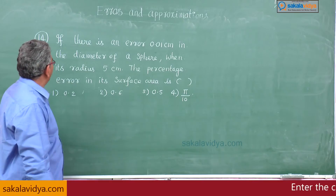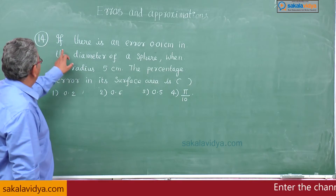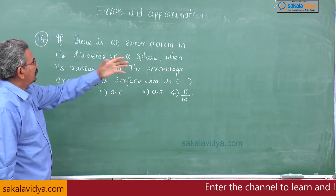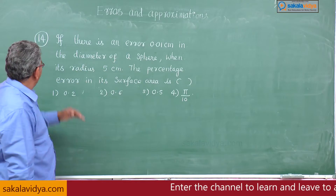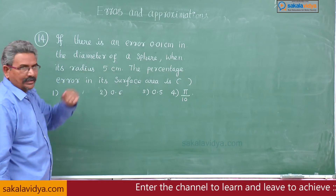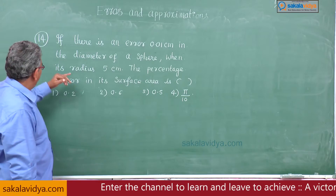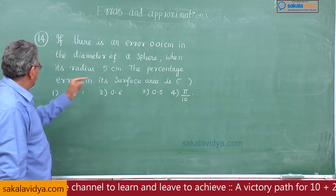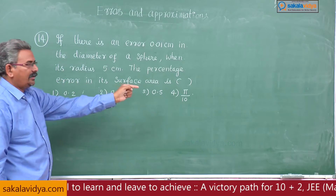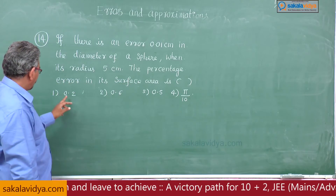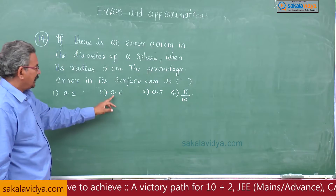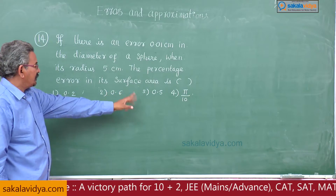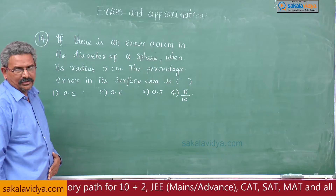Problem 14. If there is an error of 0.01 centimeters in the diameter of a sphere, when its radius is 5 centimeters, the percentage error in its surface area is: first option 0.2, second option 0.6, third option 0.5, fourth option pi by 10.